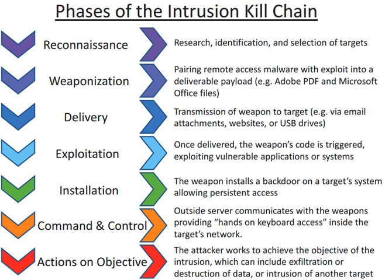A worm does not need another file or program to copy itself — it is a self-sustaining running program. Worms replicate over a network using protocols. The latest incarnation of worms makes use of known vulnerabilities in systems to penetrate, execute their code, and replicate to other systems — such as the Code Red 2 worm that infected more than 259,000 systems in less than 14 hours. On a much larger scale, worms can be designed for industrial espionage to monitor and collect server and traffic activities, then transmit it back to their creator.